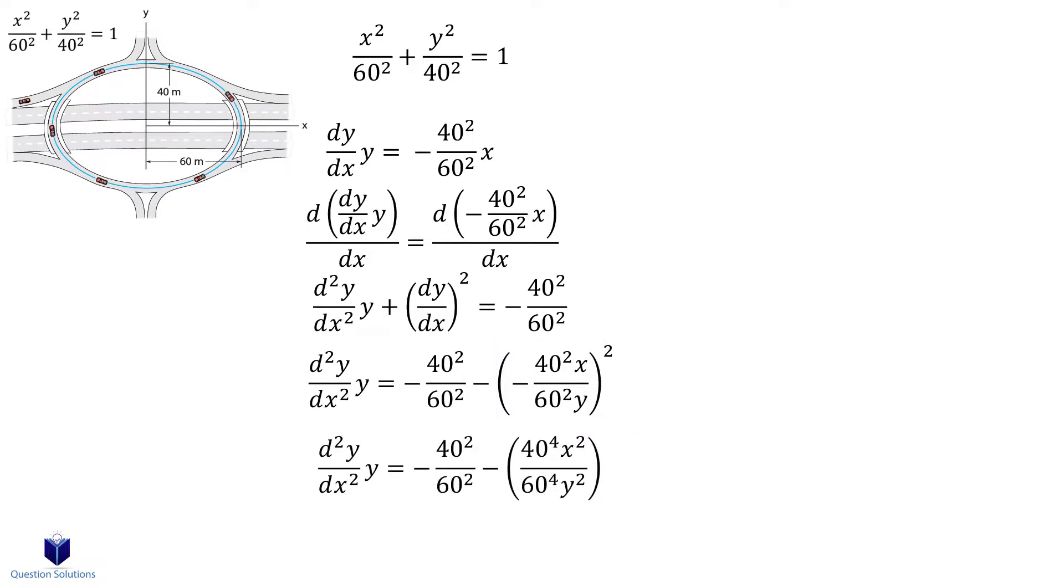If you are unfamiliar with implicit differentiation, then the key here is to realize that we can take out x squared over 60 squared, which will allow us to equate that to our original equation. Let me show you.